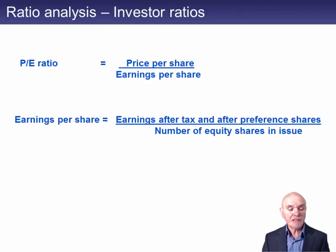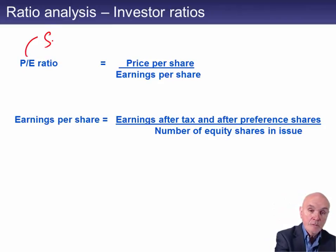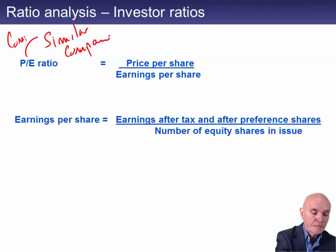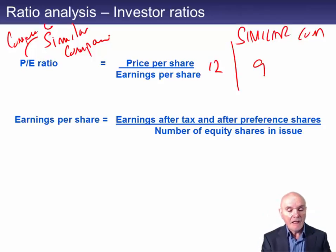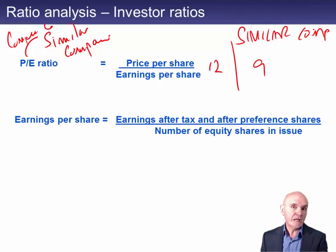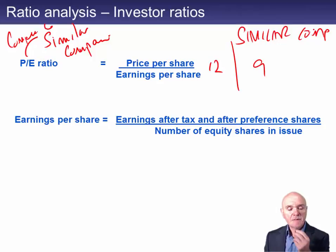Finally, two investor ratios: the P/E ratio and earnings per share. The P/E ratio must be compared to similar quoted companies. Say our company has a P/E ratio of 12, while similar companies have an average P/E of only 9. This means people are willing to pay 12 times our earnings in the share price, but only 9 times other companies' earnings — suggesting they find our company particularly attractive, even though it's in a similar business such as supermarkets or house builders.